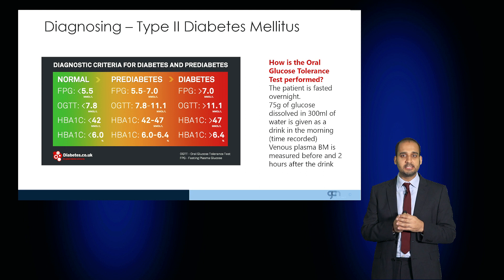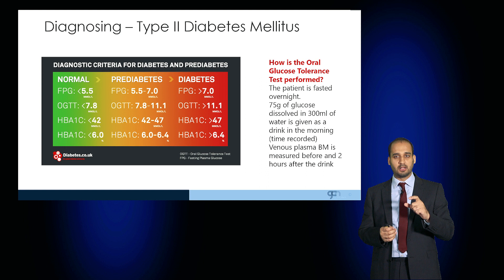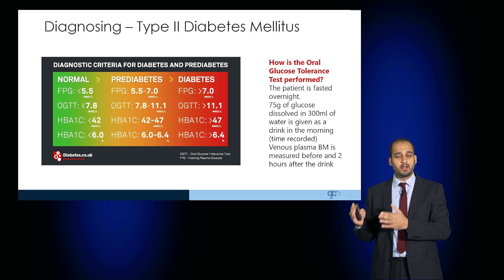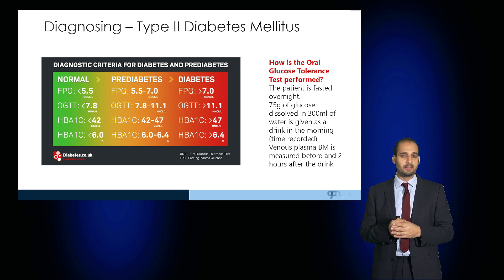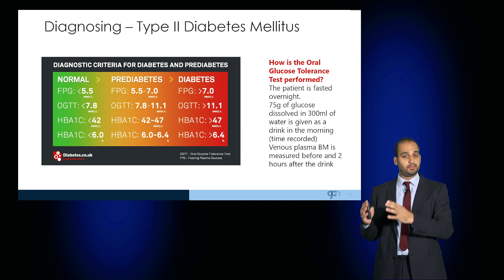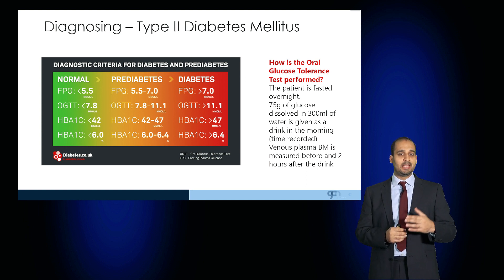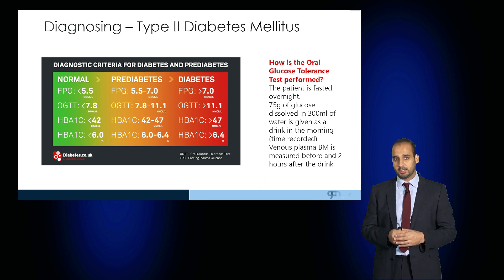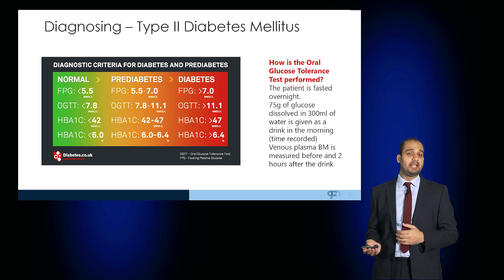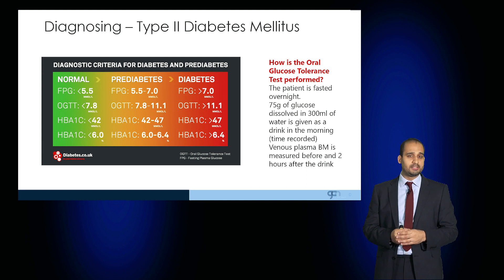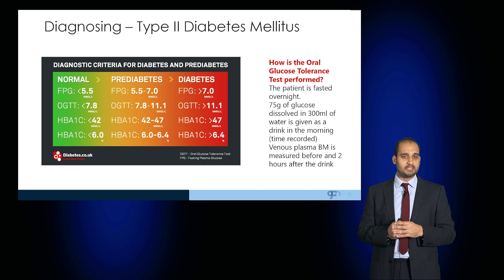An oral glucose tolerance test involves fasting the patient overnight, then giving 75 grams of glucose dissolved in 300 mils of water as a drink in the morning. Two hours following this glucose drink, the plasma glucose is recorded. The glucose levels in the blood should drop with a normal insulin response. Consequently, two hours after the oral glucose tolerance test, the blood sugar should be less than 7.8 millimoles per litre. If it remains above 11, that is diagnostic of diabetes. A result between 7.8 and 11 suggests pre-diabetes.